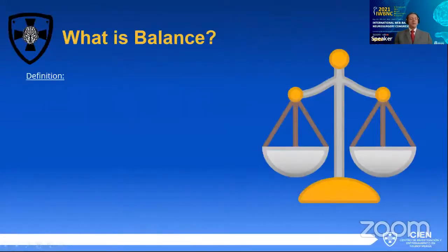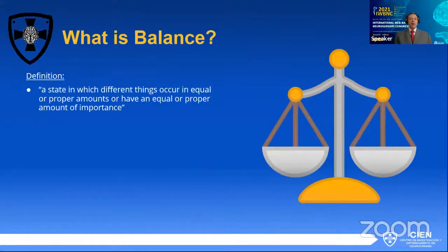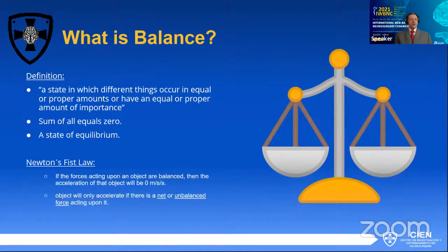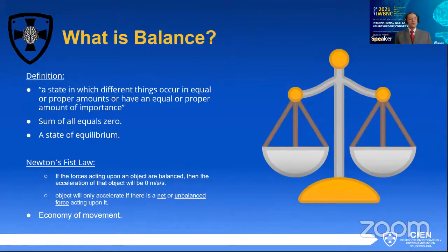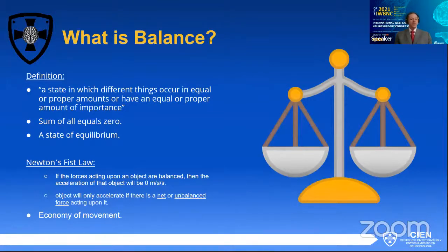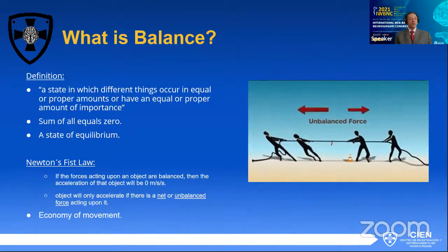What is balance? Balance is defined as a state in which different things occur in equal or proper amounts or have an equal or proper amount of importance. In other situations, the sum of all events is equal to zero — a state of equilibrium. When it comes to forces, Newton's first law comes to mind: if the forces acting upon an object are balanced, then the acceleration of that object will be zero, therefore there will be no movement. An object will only start moving if there is an unbalanced force acting upon it. This gives you an idea of what an economy of movement can be.